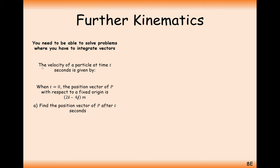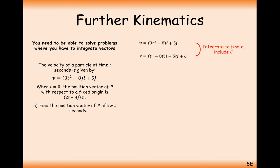Final example: the velocity of a particle is v equals (3t squared minus 8)i plus 5j. When t equals 0, the position vector of P with respect to a fixed origin is 2i minus 4j. To find the position vector after t seconds, we integrate velocity to get position, remembering to add c as a vector on the end.